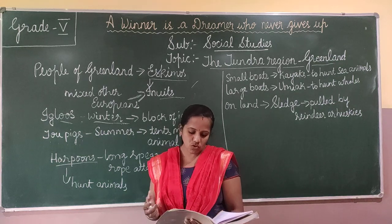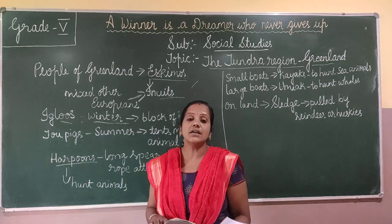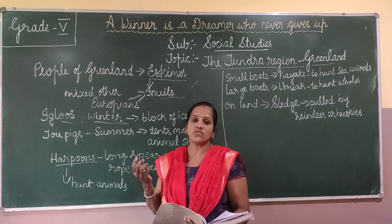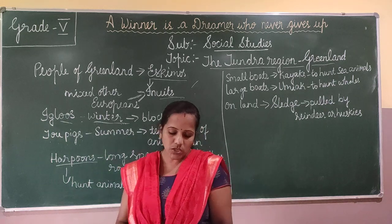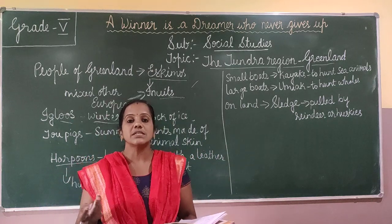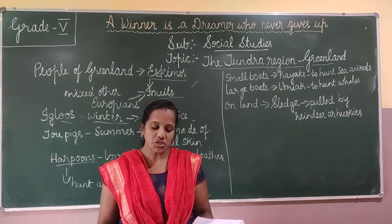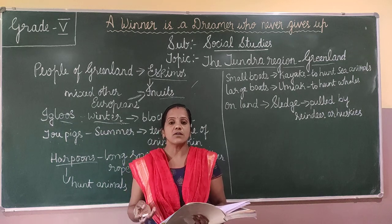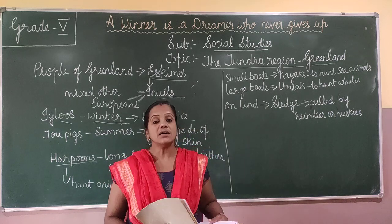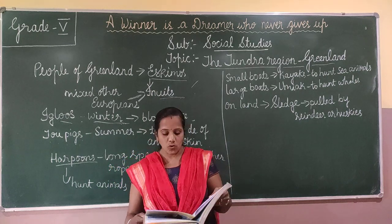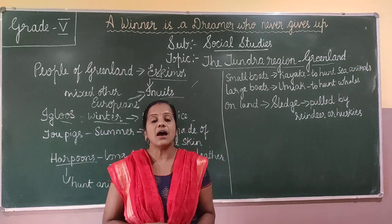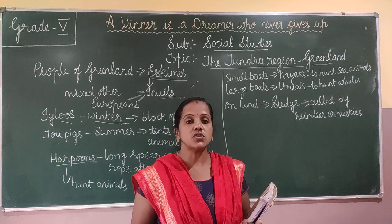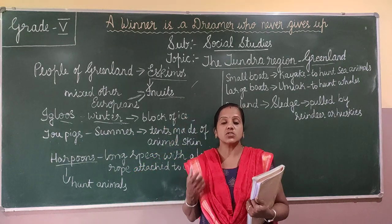The Eskimos made use of almost all parts of the hunted animals. They used the flesh as food. The fat content of the animal, called blubber, was used as fuel to cook food. And the bones and tendons were used to make needles and harpoon heads.